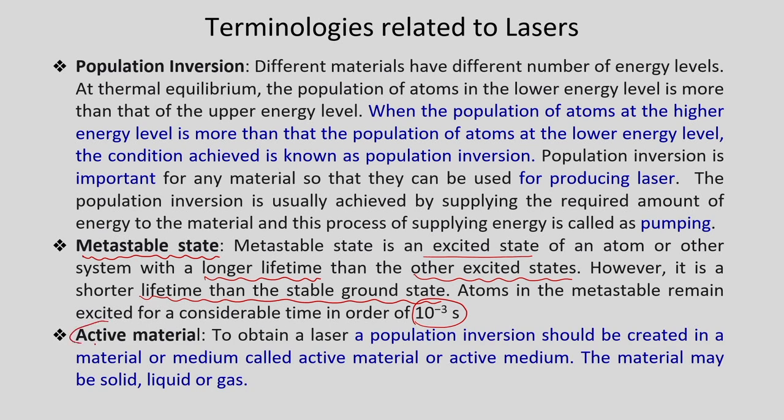The third important term is active material. To generate laser, we need a material that will produce the series of photons making up the laser beam. The material used for generating laser is called the active material. It can be a gas, solid, or liquid, and is also called the lasing medium. We will see various types of lasing materials in the next few slides.